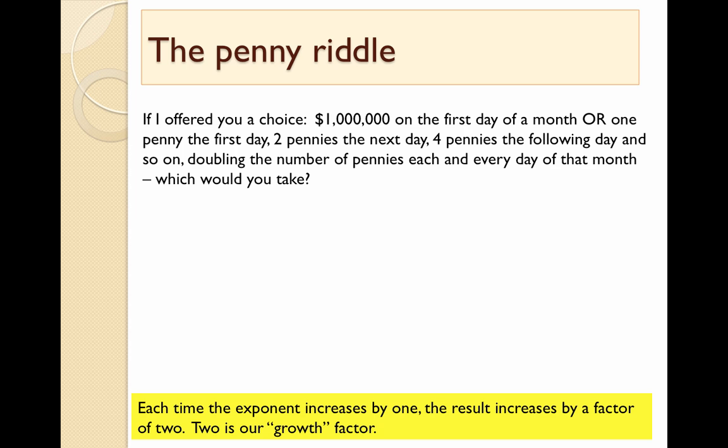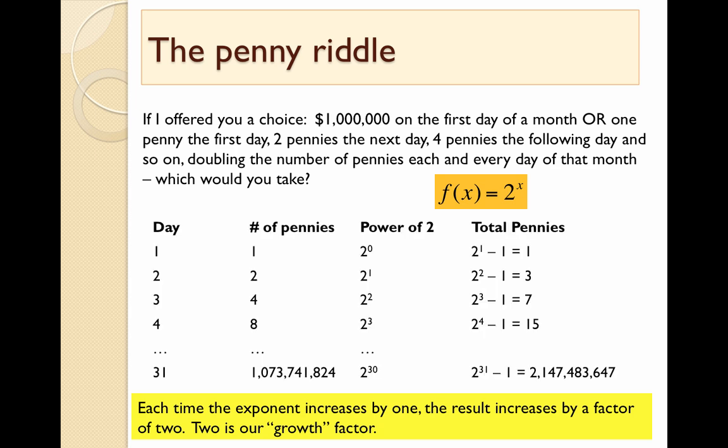Let's look at the penny riddle. Think about this. If I offered you a choice: one million dollars on the first day of a month, or one penny the first day, two pennies the next day, four pennies the following day, and so on, doubling the number of pennies each day. Which would you take? If you chose getting the pennies doubled every day, you're in luck. This is actually the exponential function f(x) = 2^x. Let's look it through so you can see how it works.